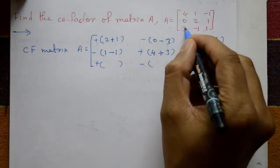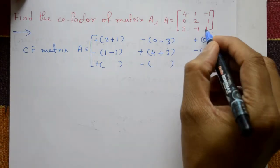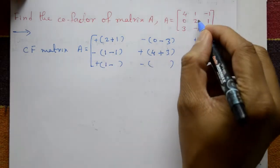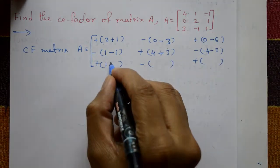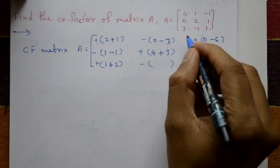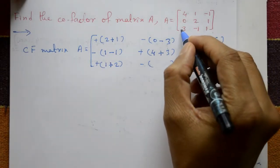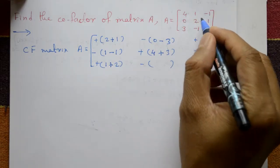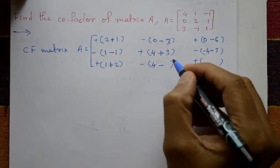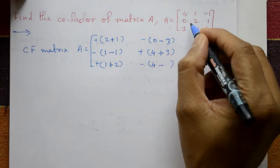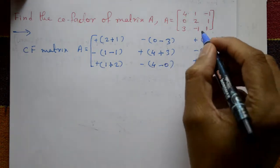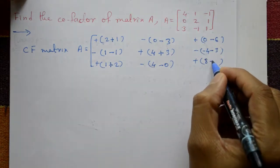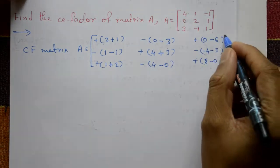Then last row. First column, third row — consider these 4 elements: 1 into 1 is 1, minus sign, 2 into minus 1 is minus 2, and minus plus, so plus 2. Next, minus sign: third row, second column — 4, 0, minus 1, 1 — consider: 4 into 2 is 4, minus sign, and next is 0. Last element: third row, third column — consider this 4: 4 into 2 is 8, minus sign, 0.